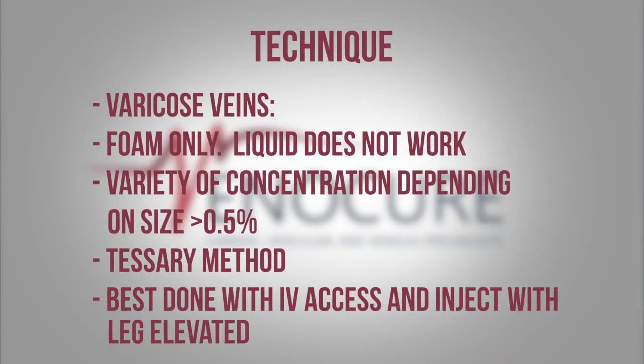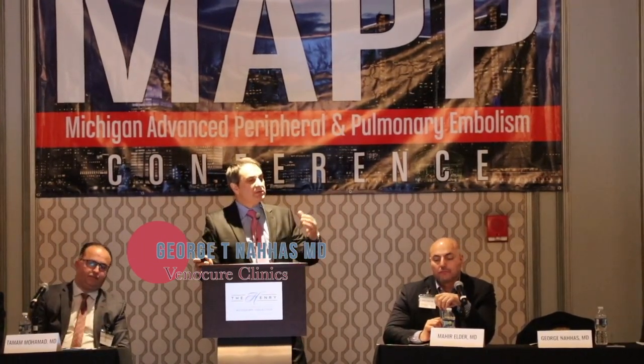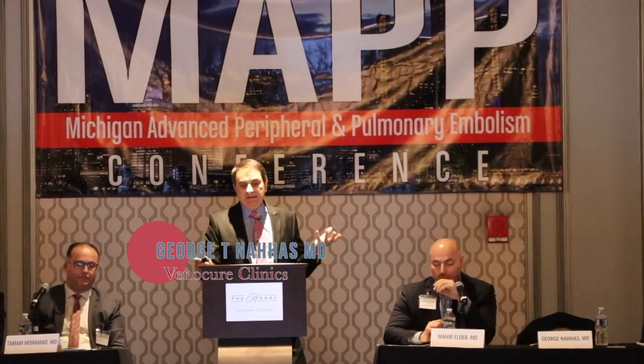Finally, the large varicose veins — the ones that are bulging — that's what people come to us most commonly for. Those are the tributaries I was talking about, usually from the great saphenous vein, short saphenous vein, or the lateral subdermic plexus of Albanese — a congenital network of veins that becomes insufficient sometimes and gives varicosities in the lateral thigh and knee. For these, of course you go to higher concentration; bigger veins require higher concentration. You inject them with handmade foam or with Varithena, which is foam made with CO2 by the manufacturer.